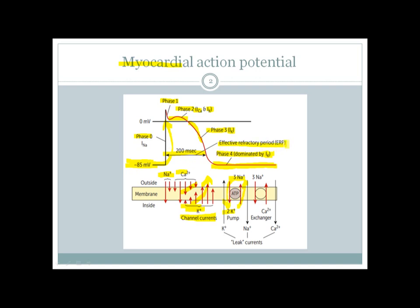You can also see the effective refractory period — the phase during which if you give another stimulation to the cardiac muscle, the muscle will not be excited again until the action potential is complete. This period is about 200 milliseconds.